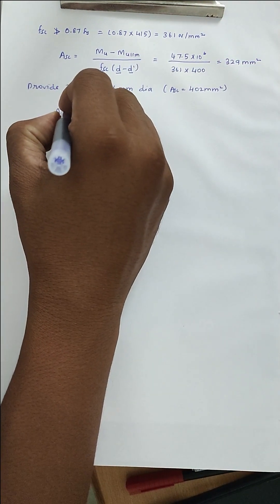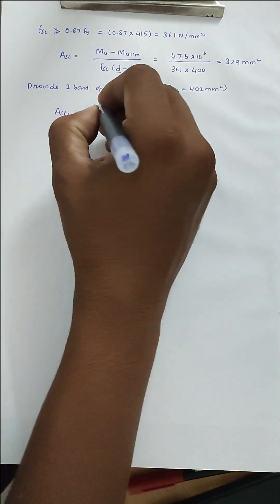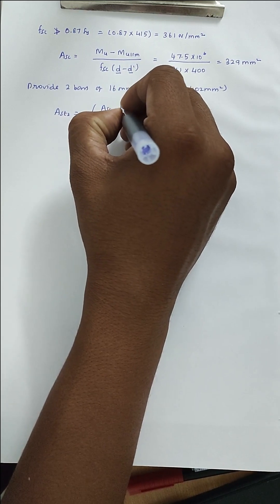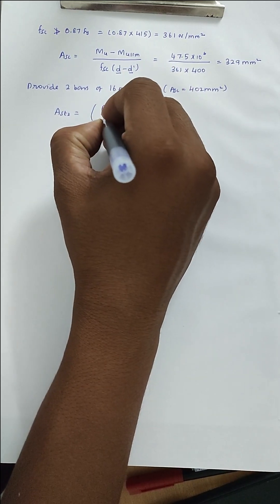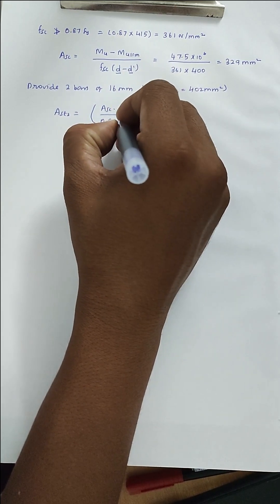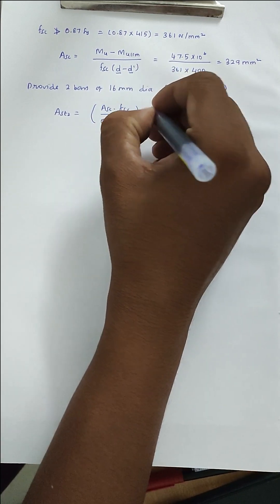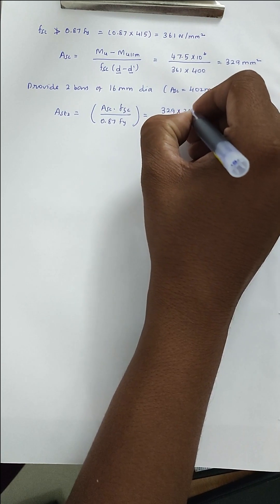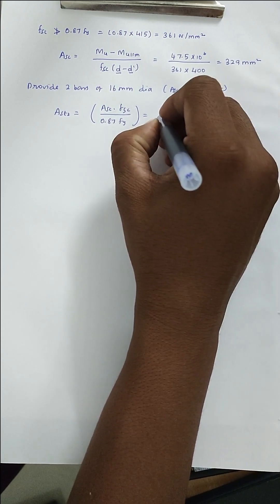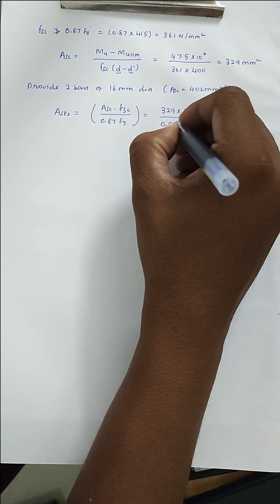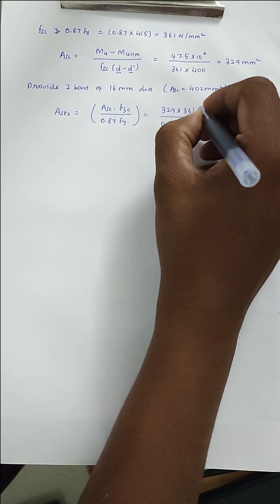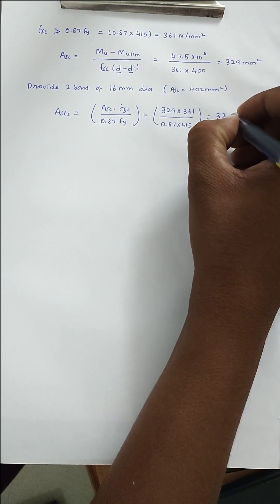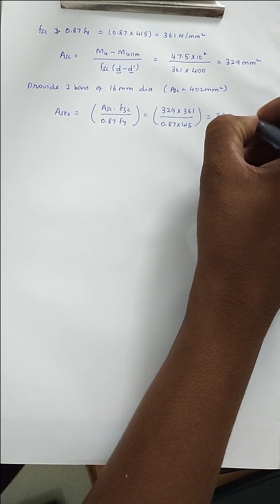Now find AST2. The formula is: AST2 = ASC × fsc / (0.87 × fy). Substituting: 329 × 361 / (0.87 × 415) = 329 mm².